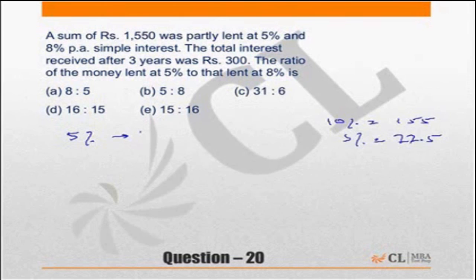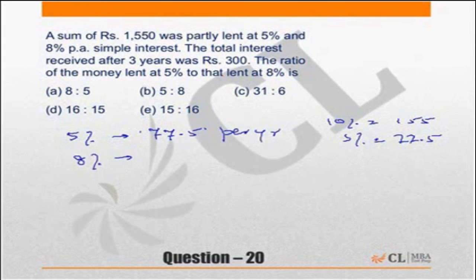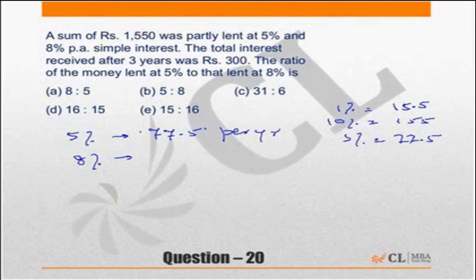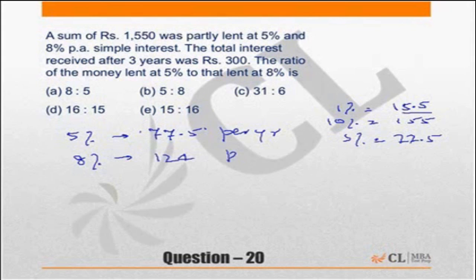At 8% rate of interest on ₹1550: 10% is ₹155, so 1% is ₹15.5. Then 2% is ₹31, 4% is ₹62, and 8% is ₹124. So you would have received ₹124 per year at 8%.